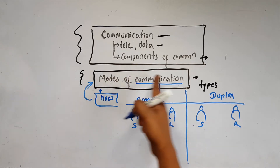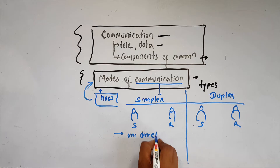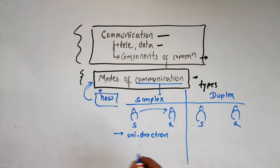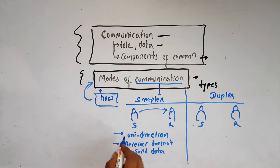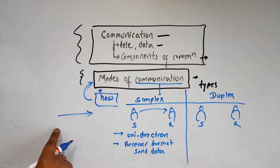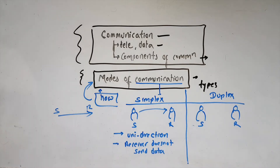The simplex mode of communication is always unidirectional. Unidirectional means that the sender always sends the data and the receiver always receives the data. The receiver does not send data back to the sender.